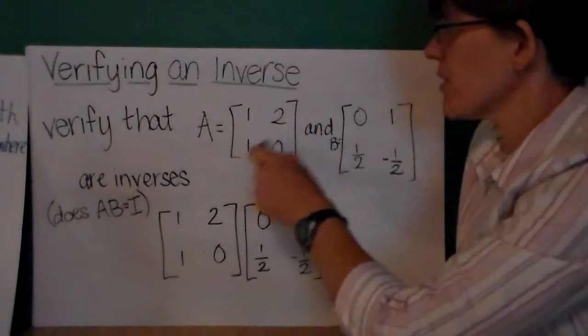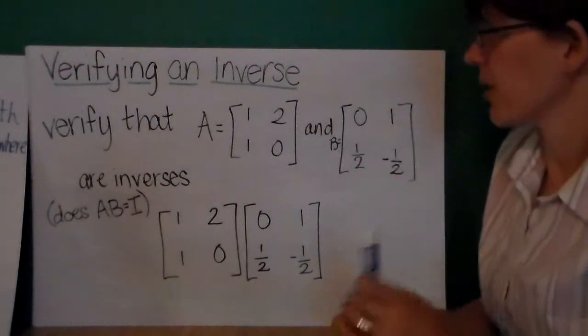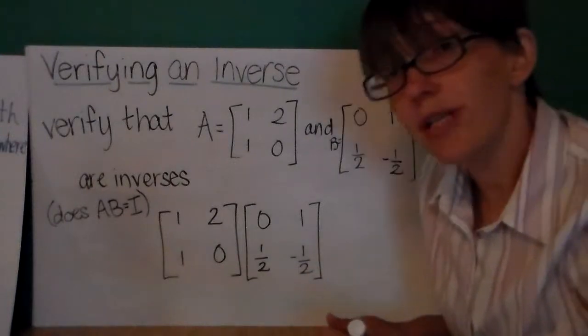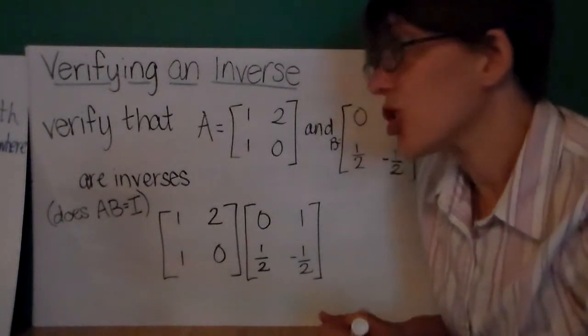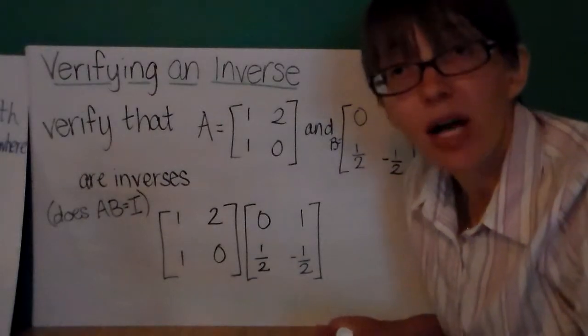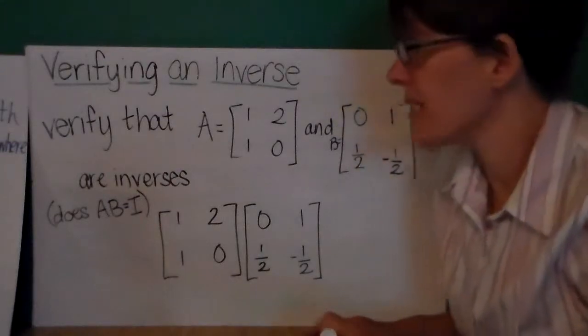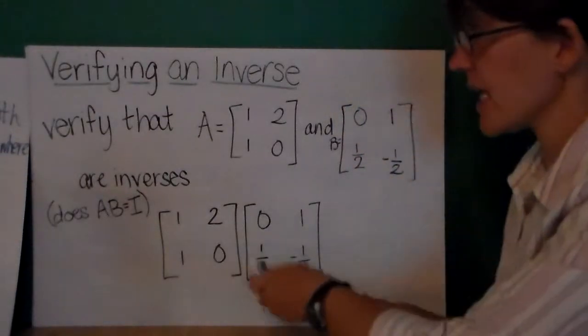So here's A, [1, 2; 1, 0] and B, [0, 1; 1/2, -1/2]. All I want to do to determine if these are inverses is to determine if the product AB is equal to the 2 by 2 identity matrix. So let's multiply A times B.